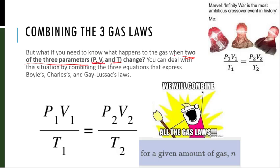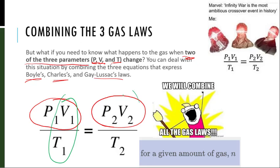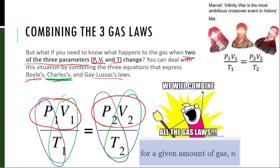You can deal with this situation by combining the three equations that express Boyle's, Charles, and Gay-Lussac's law. Let's check this out. P1V1 equals P2V2 is Boyle's law. V1 over T1 equals V2 over T2 is Charles' law. And P1 over T1 equals P2 over T2 is Gay-Lussac's law.